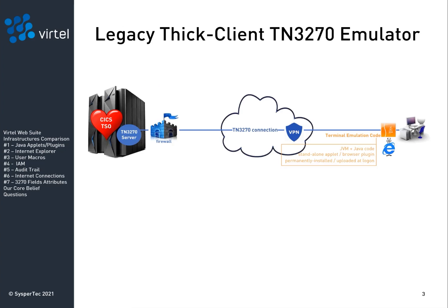Here is a diagram that illustrates the infrastructure typical of legacy TN3270 emulators. A TN3270 server runs on the host mainframe. It serves 3270 screens through Telnet connections to user devices. Terminal emulation code running on the user devices displays the 3270 screens. That code is typically Java and requires installing a Java virtual machine on the user device. It may be a standalone application or browser extension, also referred to as a plugin. It may be permanently installed on the device or dynamically uploaded at logon time.